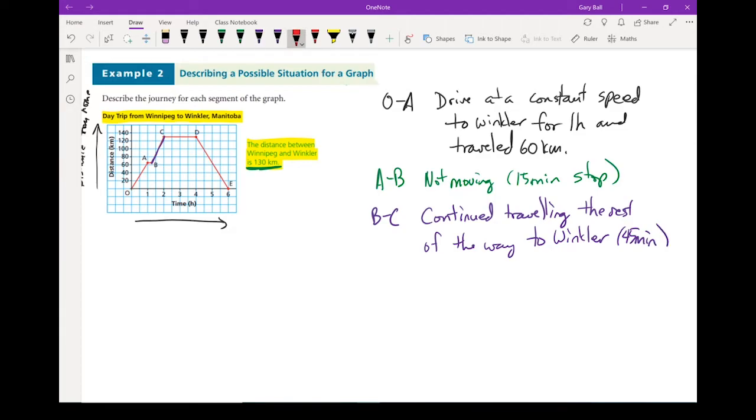Next step, we're going to look at C to D. The distance is not changing even though time goes on. Looks like they stayed at Winkler. So the distance from Winnipeg didn't change. And this looked like it was from 2 hours to 4 hours. So that is for 2 hours. They stayed in Winkler.